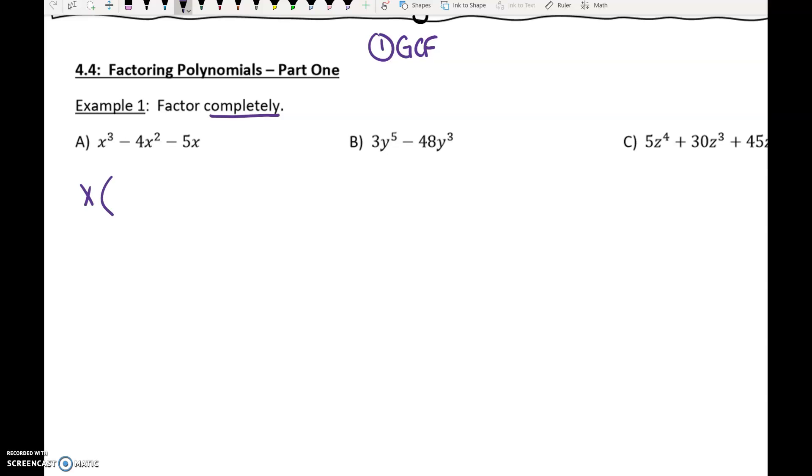x cubed, take out an x, you've still got x squared. Negative 4x squared, take an x out, you've got negative 4x. Negative 5x, take an x out, you've got negative 5.